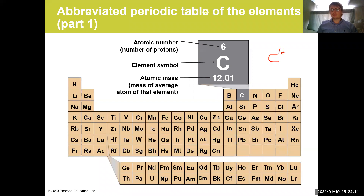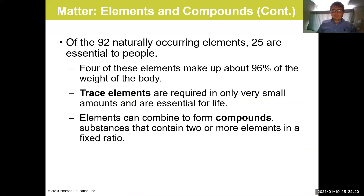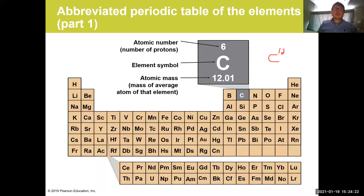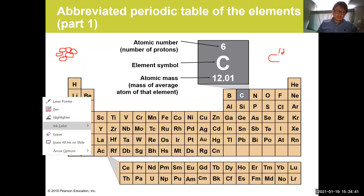For Carbon-12 we have six protons, six neutrons, and six electrons. If we draw the atom for carbon, we place six protons and six neutrons in the nucleus — I'll use a different color to distinguish them.